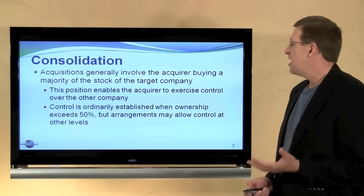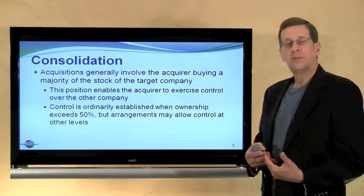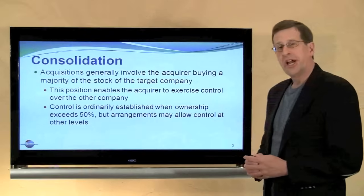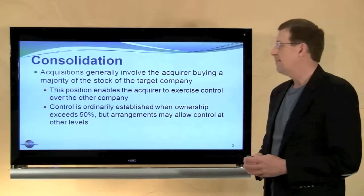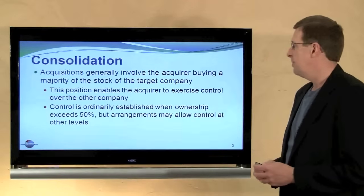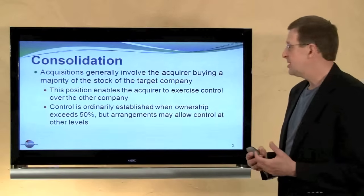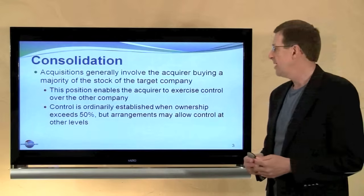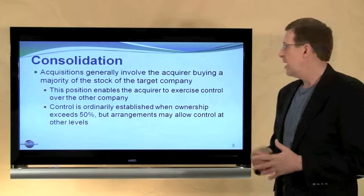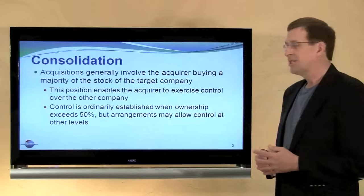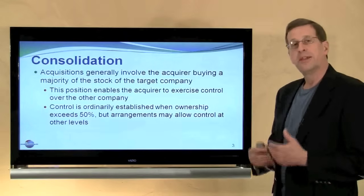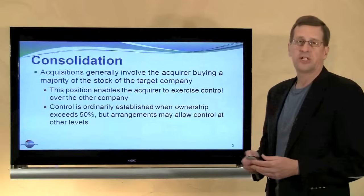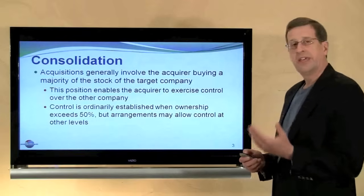A consolidation occurs coincident with a purchase or an acquisition where one business buys another. Acquisitions generally involve the acquirer buying a majority of the stock of the target company. By buying a majority of the stock, that position enables the acquirer to exercise control over the other company. That control is ordinarily established when ownership exceeds 50%, but it can occur at lesser levels, or through other contractual arrangements or interlocking directorates.